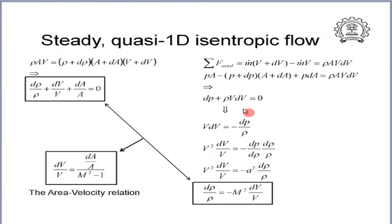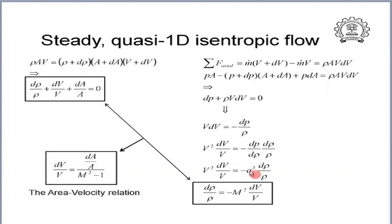We rewrite the momentum balance as V dV equals minus dP over rho. Writing V squared over V times dV and introducing dP over drho times drho over rho on the right-hand side, and noting that within isentropic flow dP/drho is at constant entropy — which by definition equals the square of the speed of sound — we replace dP/drho with a squared. Taking the ratio V squared over a squared gives the square of the Mach number, yielding the final form of the momentum balance used in the analysis.